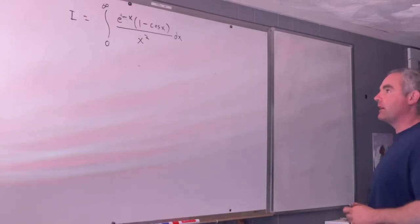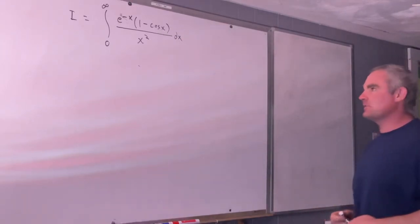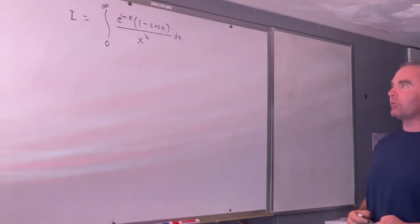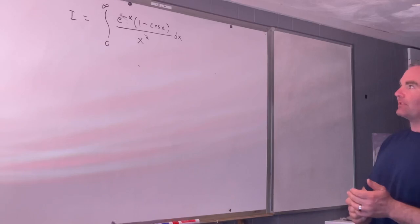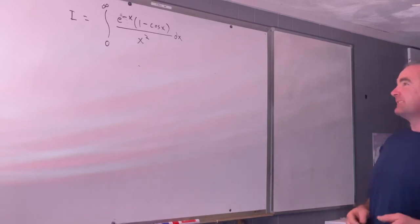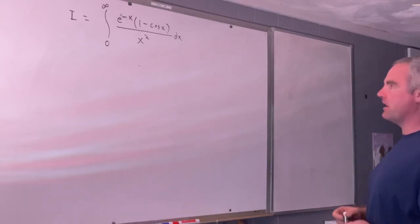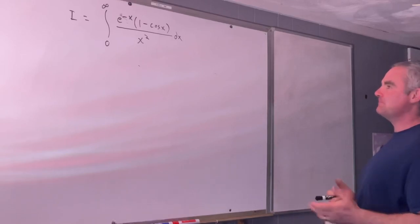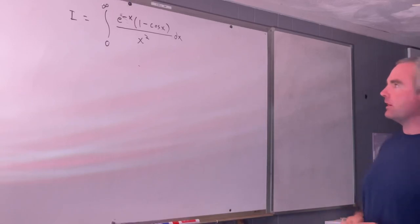Hi everybody, welcome back to the Feynman Technique. I got this integral off the channel Maths 505. I tried to find a better way, or at least a different way, to solve it than he used. I wasn't successful, except in a very minor way. My solution does diverge from his slightly, but basically this is going to be the same solution that he offered up.